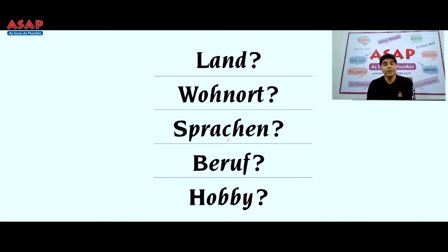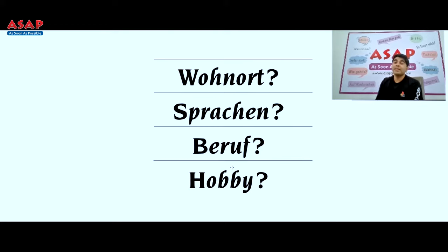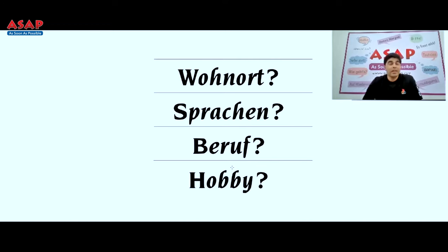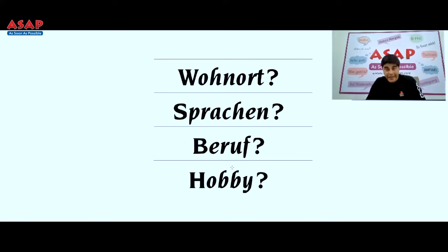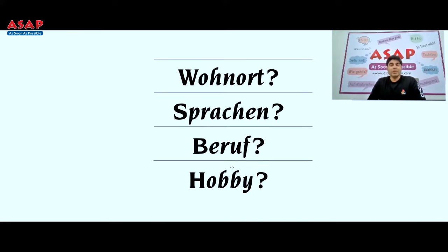After the introduction, the examiner may ask you one or two follow-up questions — not many. Questions like 'Wo wohnen Sie?' or 'Wann sind Sie geboren?' (when were you born?). They may also ask for your email address, ask you to spell something, give you a word or surname to spell, or ask where you are from. You have to be prepared with numbers, spelling, and similar things.